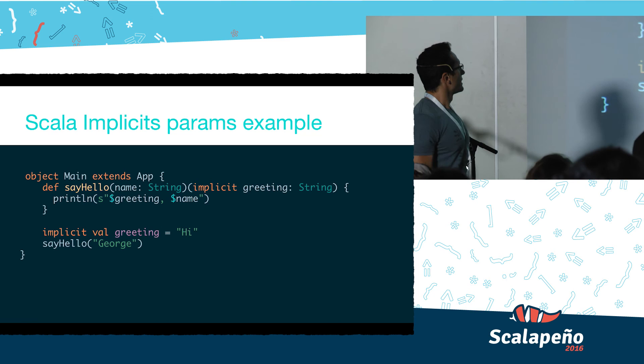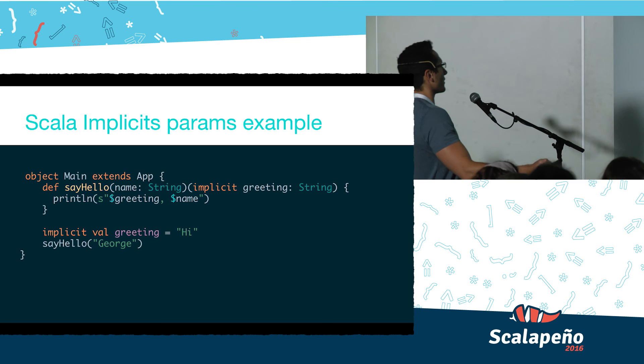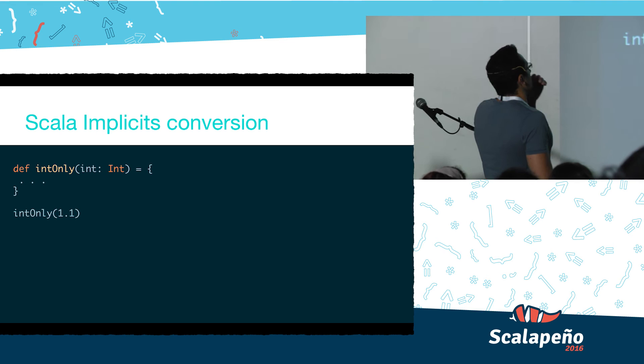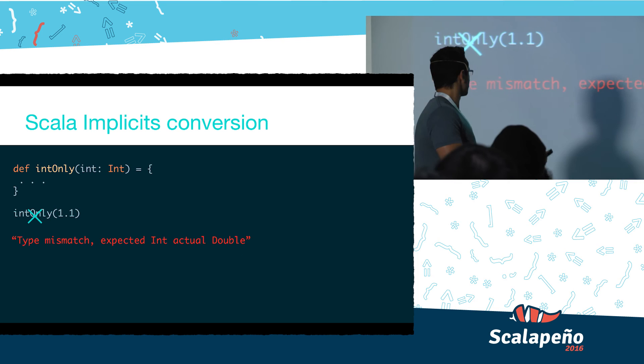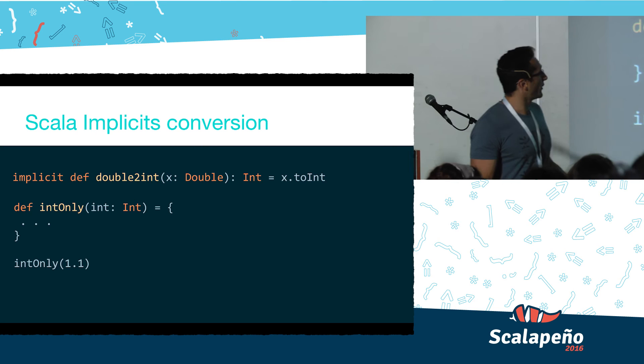The first example is implicit parameters — a very simple example. We have a function `sayHello` that takes two parameters, one of which is implicit. We then initiate a new implicit value, and when we call `sayHello` with only one parameter, the output will be 'Hi, George.' Scala's implicit conversion also allows us to convert from type A to type B. If we have a function that accepts only ints but we try to pass a double, we get a compilation error. But if we add an implicit function, the compiler will search its current scope for a matching signature and convert the type.